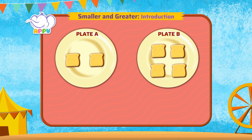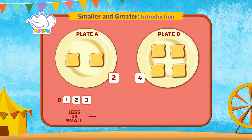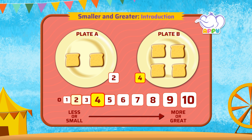Let's compare and see which plate has the greatest number. Plate A has 1, 2 bread slices. And Plate B has 1, 2, 3, 4 bread slices. If we see the order of numbers, 4 comes after 2. So 4 is greater than 2. So you will select Plate B with 4 bread slices.